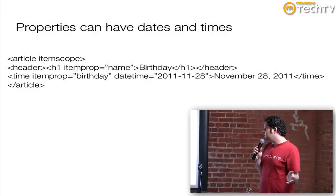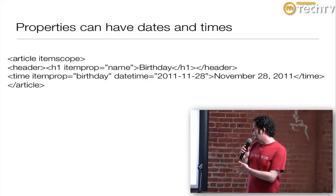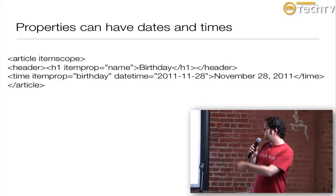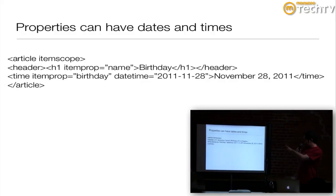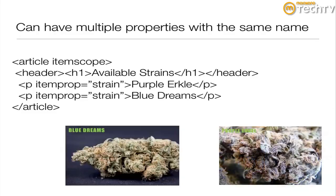Properties can have dates and times, so it's very simple to mark up the date and time of events and make it machine-readable in a way that's so easy and native to HTML that it takes no extra code at all. You start with itemscope, then you have the name and the time — itemprop there is 'birthday.' We can also have multiple properties with the same name. For instance, you have the itemscope and 'available strains,' and you'll see itemprop 'strain' appears twice, because we can use it multiple times and it wouldn't make a difference whatsoever.